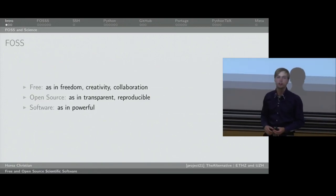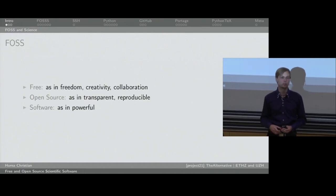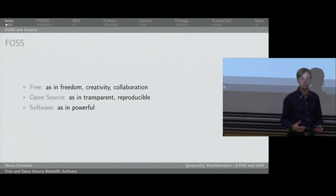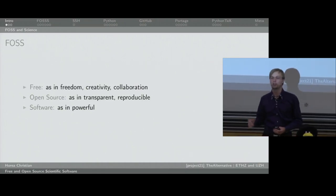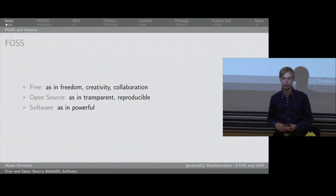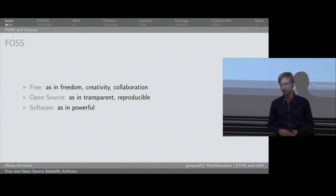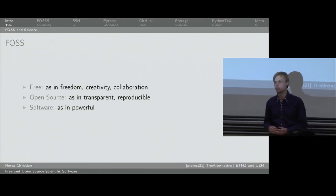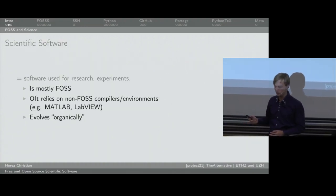Open source means the software can be read — you as a human can understand how it's programmed and how it works. You have access to the source code. This is very important for scientific purposes because it guarantees that the software is transparent and reproducible. In the same way you document your experiment to make sure it's reproducible, you also document your software. Software is a very powerful tool for science, though many scientists are still skeptical about using software in their workflow.